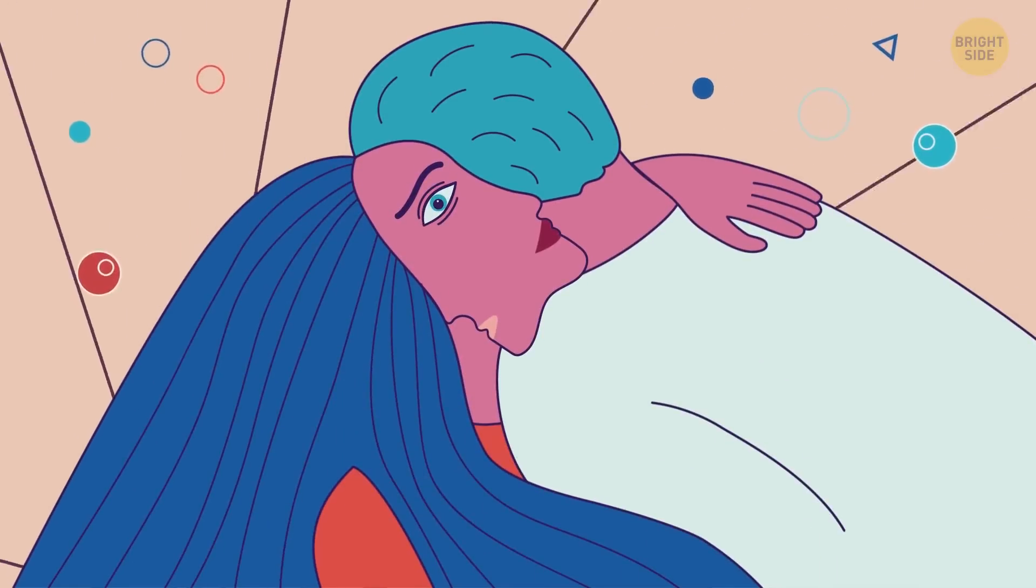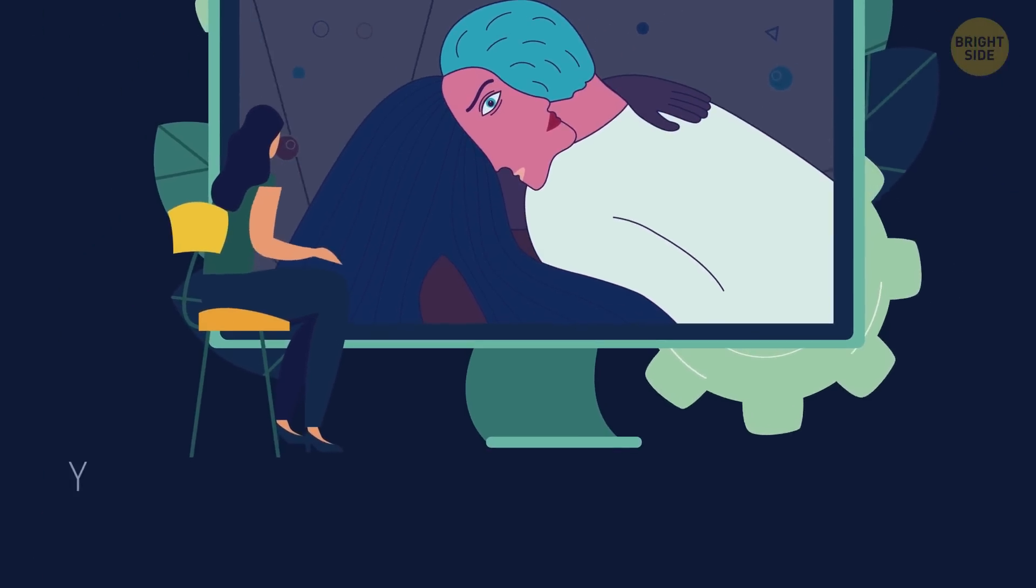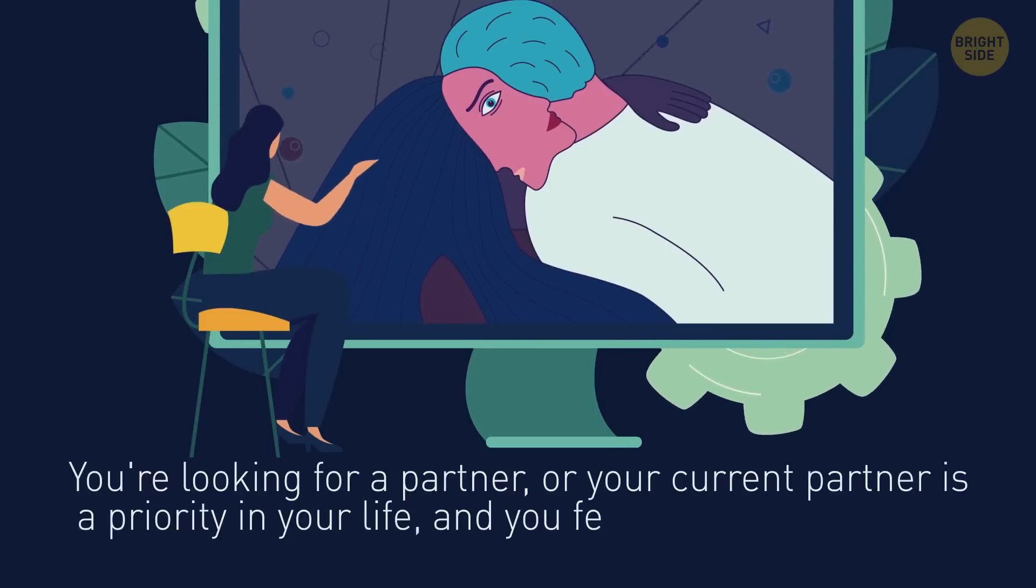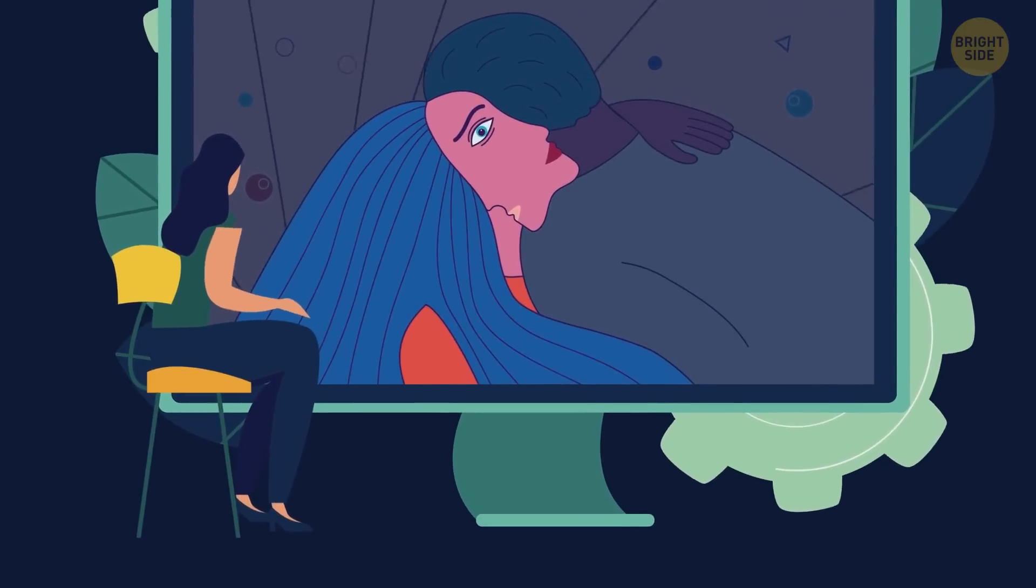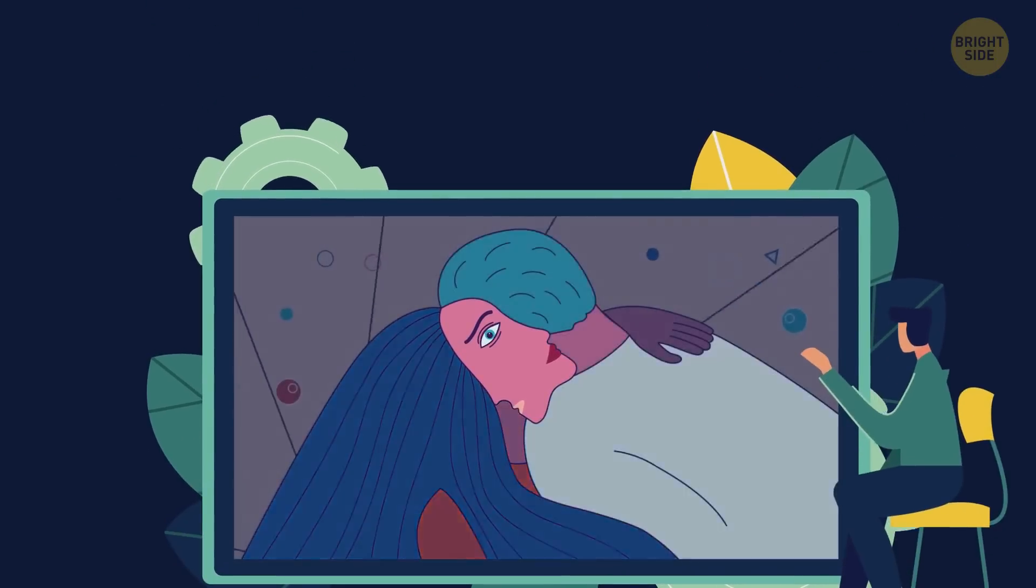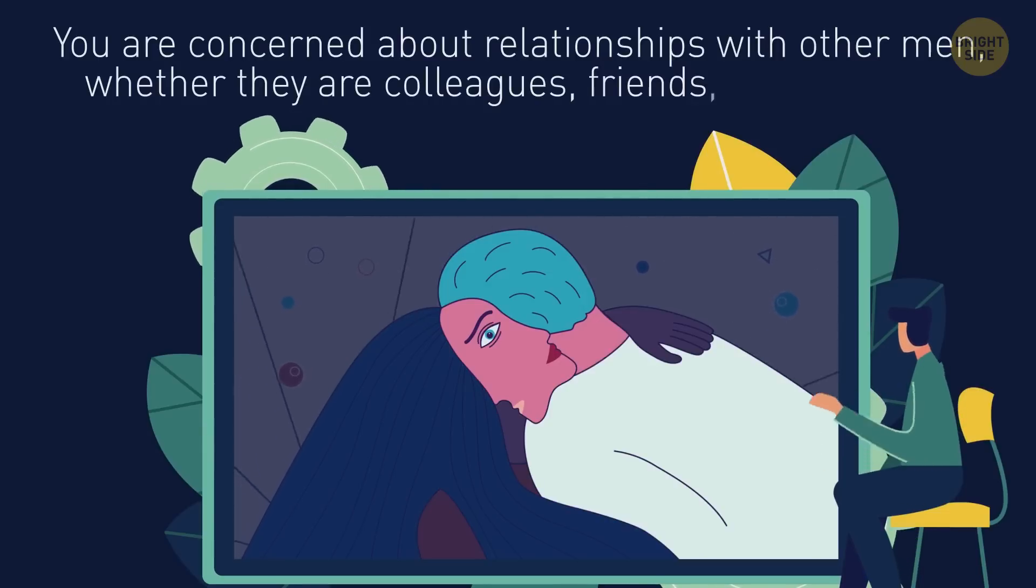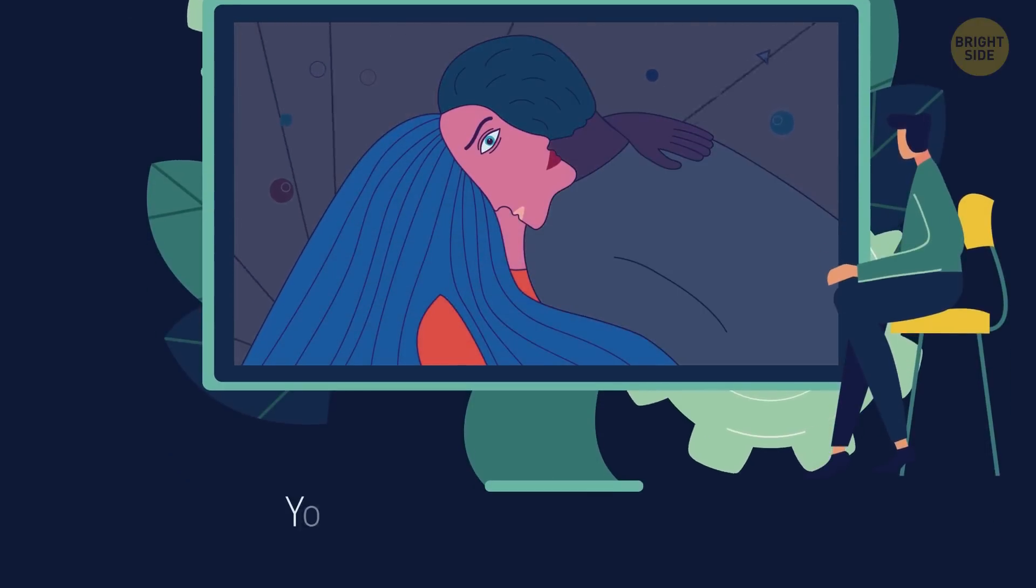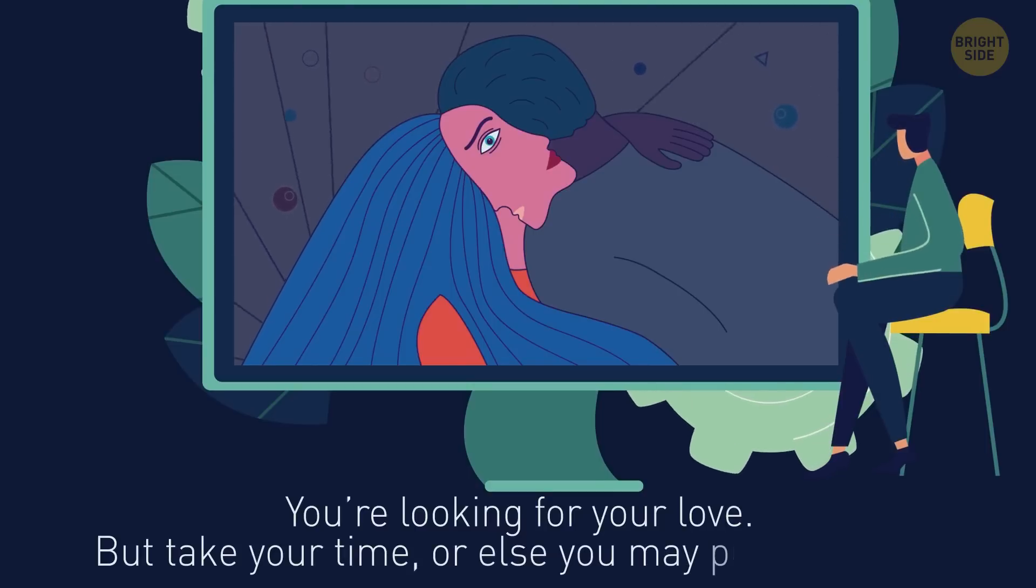Oh, this one is harder. If you're a girl and you've seen a man's face here, then either you're looking for a partner, or your current partner is a priority in your life, and you feel a strong emotional connection with him. But if you see a woman's face, then you feel comfortable and self-sufficient. Guys who saw a man's face are concerned about relationships with other men, whether they are colleagues, friends, or even other guys in the gym. And if you see a female face, you're looking for your love. But take your time, or else you may push too hard.